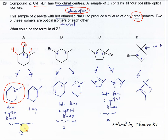For option B, it also has two chiral centers — this one and this one — so it meets the initial requirement. But after undergoing elimination, the bromine here can be removed with this hydrogen to form a double bond, and this bromine can also be removed with this hydrogen to form another double bond.